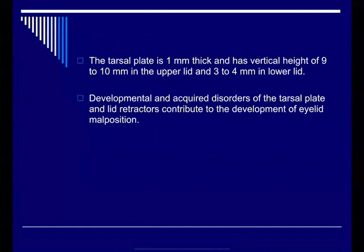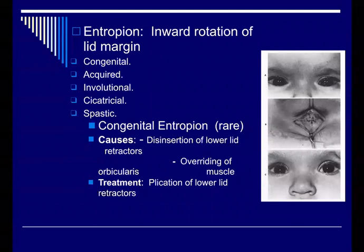The tarsal plate holds the integrity and stability of the lid. The tarsal plate of the lower lid is shorter than the upper lid — about 1 millimeter thick, with a vertical height of 9 to 10 millimeters in the upper lid and 3 to 4 millimeters in the lower lid. Developmental and acquired disorders of the tarsal plate contribute to lid malposition. In children, congenital entropion usually happens by overriding of the lower lid retractors or orbicularis.